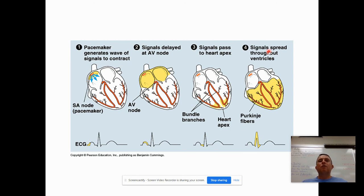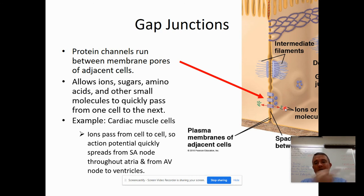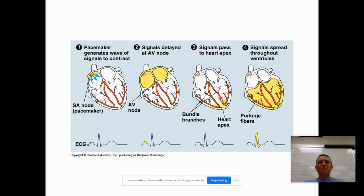The point is that for all of this electrical activity to be coordinated and to travel efficiently through the heart tissue, those side-by-side heart muscle cells need to be able to very quickly exchange ions with each other. Those ions need to pass right across the membrane very rapidly — and that's what gap junctions allow.